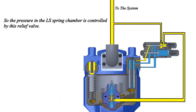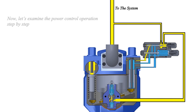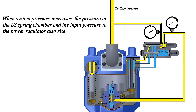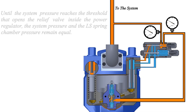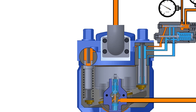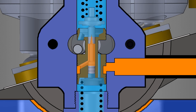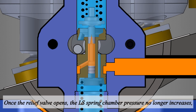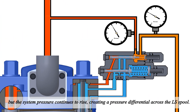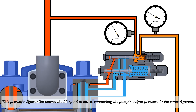The pressure in the LS spring chamber is controlled by this relief valve. When system pressure increases, the pressure in the LS spring chamber and the input pressure to the power regulator also rise. Until the system pressure reaches the threshold that opens the relief valve inside the power regulator, the system pressure and the LS spring chamber pressure remain equal. Once the relief valve opens, the LS spring chamber pressure no longer increases, but the system pressure continues to rise, creating a pressure differential across the LS spool.